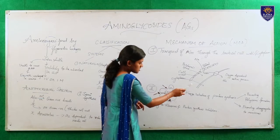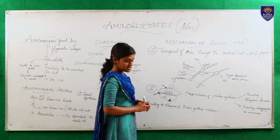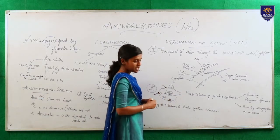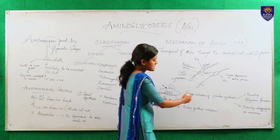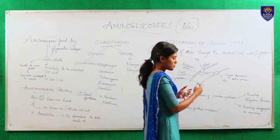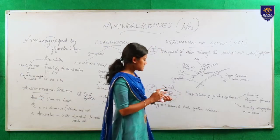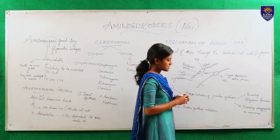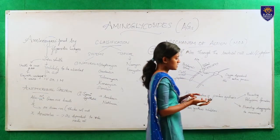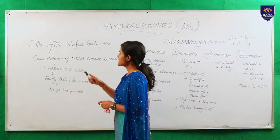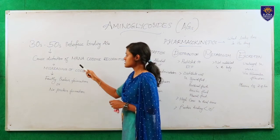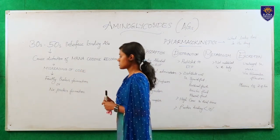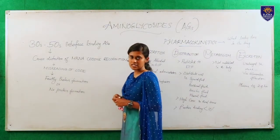After reaching the cytoplasm, they bind to the ribosomal subunits. Streptomycin binds to the 30S ribosome. All other aminoglycosides may bind to 50S, some to 30S, and some to the interface of 50S-30S ribosomes. As they bind to the ribosomal subunit, they freeze the initiation of protein synthesis, preventing polysome formation and also promoting disaggregation into monosomes. When aminoglycosides bind to the 30S-50S interface, they cause distortion of mRNA codon recognition, leading to misreading of code, causing faulty protein formation or no protein formation.